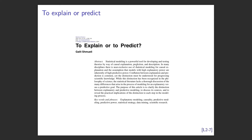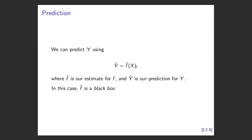She argues models are used to explain relationships, to predict new observations, or just for general description. For prediction, we want to predict a new observation indicated by y-hat, and we estimate f from some training data set. Our f-hat of x is just a black box - you put in x and out spits y-hat. That's prediction.